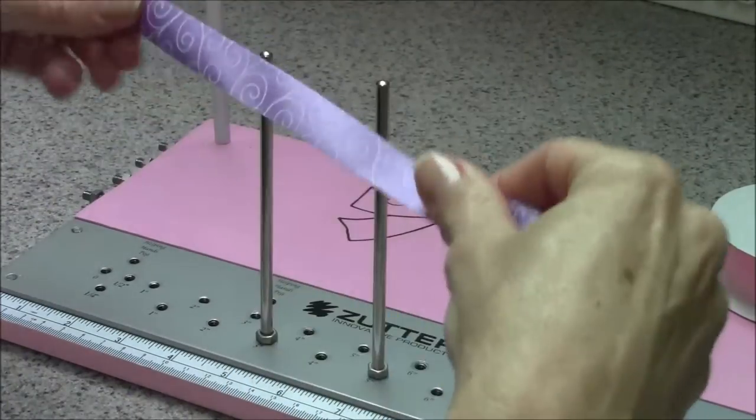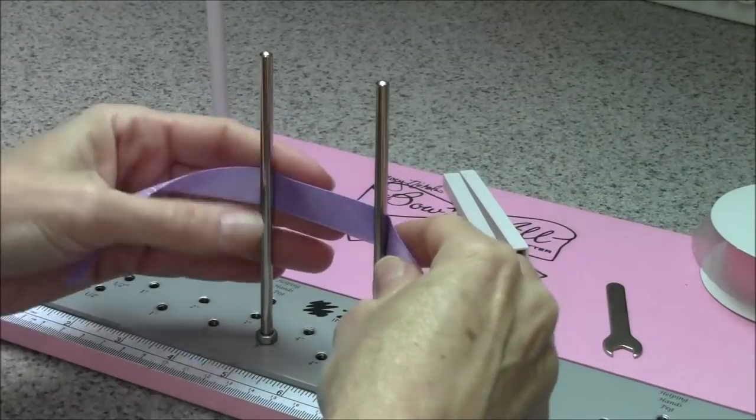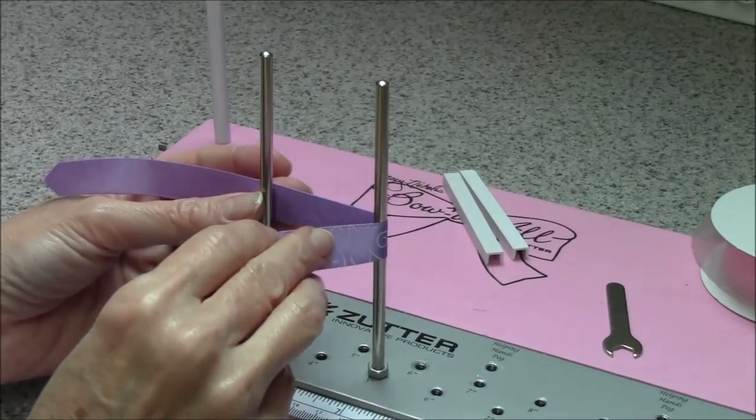Now if you like the way the figure eight bows look because they are a little poofier, you can still do a figure eight bow with this ribbon. You just need to add a little twist in the middle.